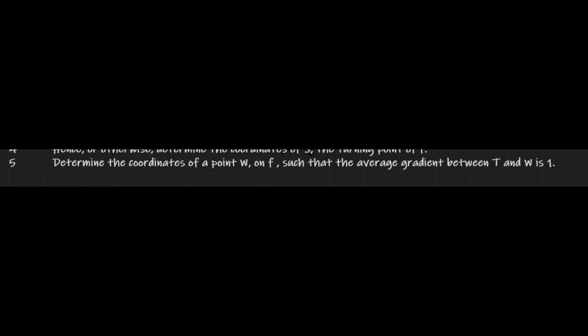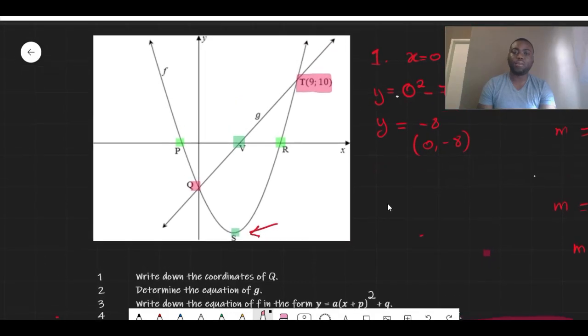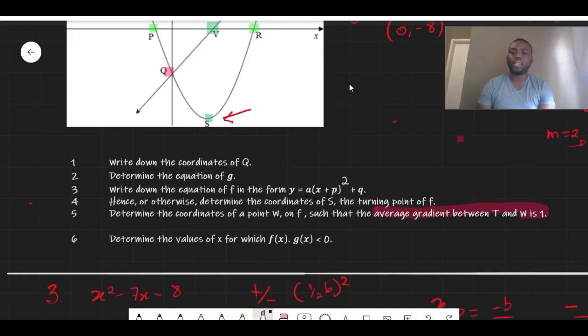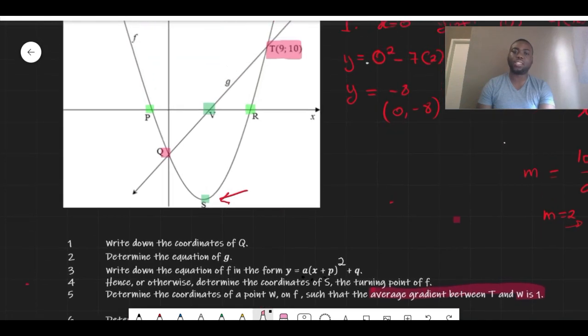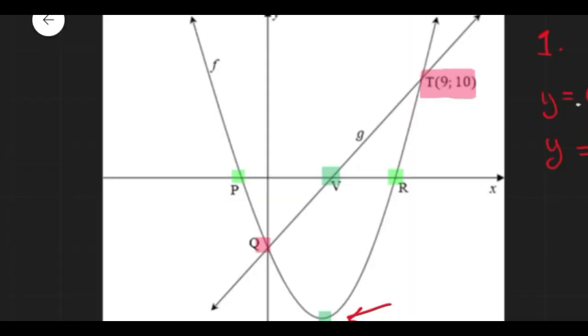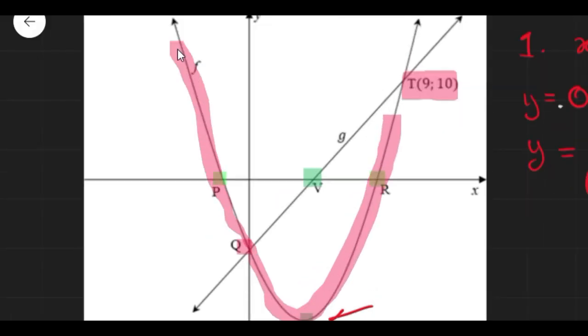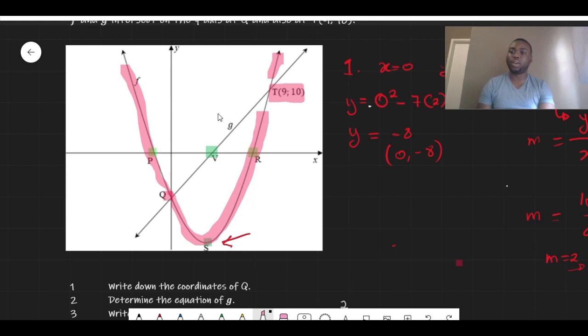And that's it. So question five says determine the coordinate of point W on f such that the gradient of T and W is 1. Now to understand this particular question, if you look closely at this, there is no W. Another thing we were told about this W is that it is on f, meaning that it's on a parabola.